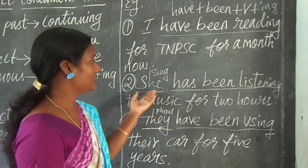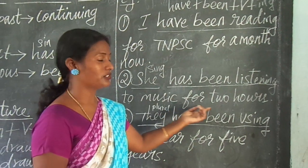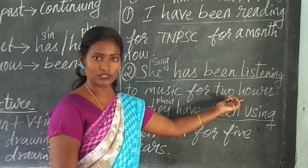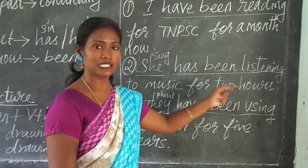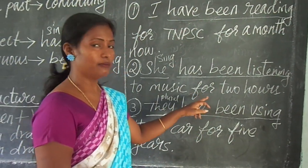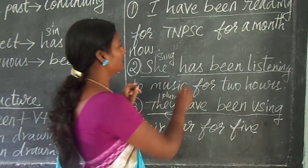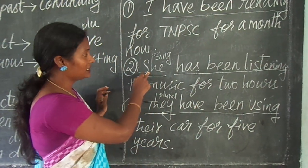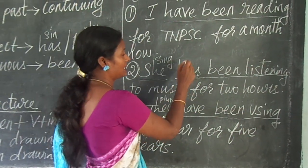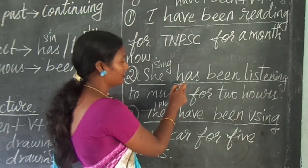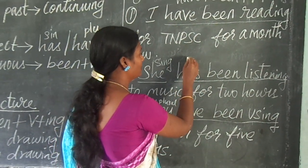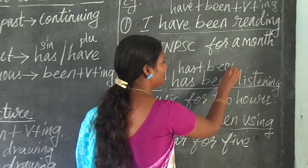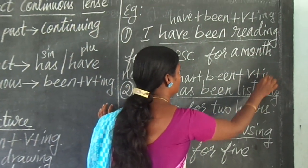Second example: 'She has been listening to music for two hours.' So two hours ago she started to listen to the music, but still she is listening. So it is present perfect continuous tense. The structure here is: since the subject 'she' is singular, we are taking 'has' — has is the singular perfect verb. So here: has plus been plus verb plus ing.